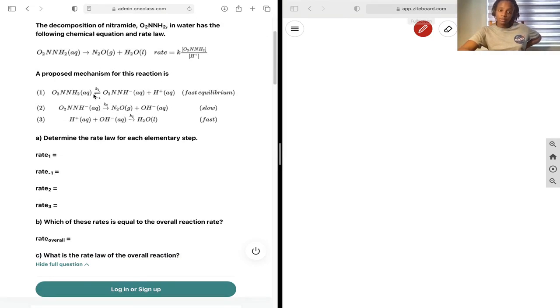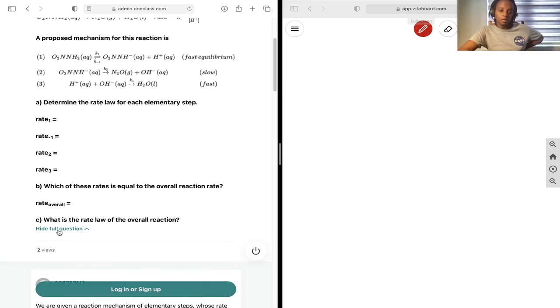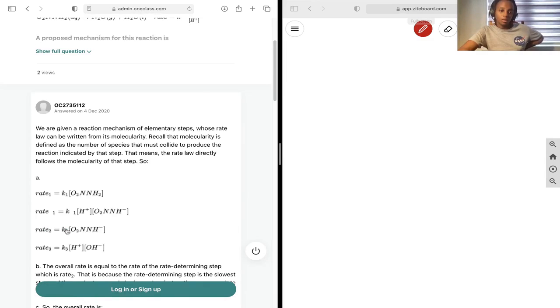So rate 1, rate negative 1 because it's a reversible reaction in equilibrium, rate 2, and rate 3, and of course rate overall.